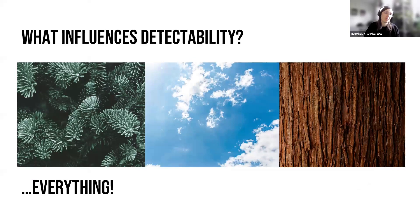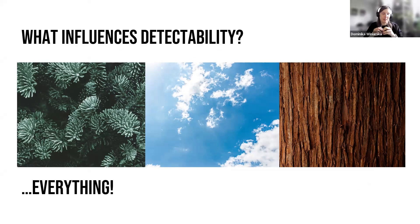That area covered by those species is called the active space. What influences detectability? Basically everything: needles, leaves in the forest, temperature, humidity, wind, terrain structure, the arrangement of trees and their placement. It all affects detectability. Because of this variability, PAM studies are pretty much incomparable — we cannot compare them directly because we know that detection ranges are very different for each site.